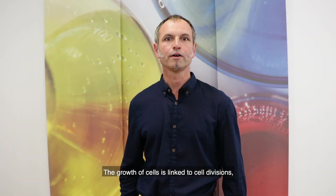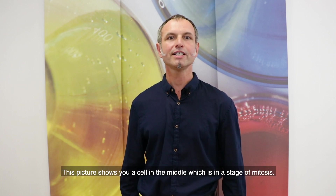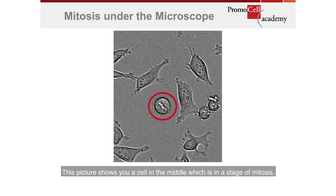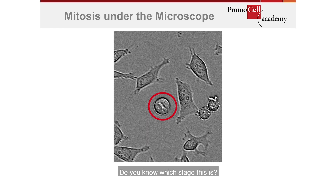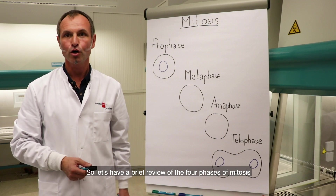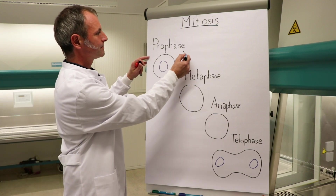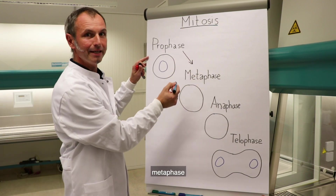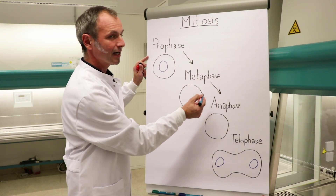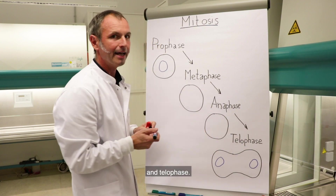The growth of cells is linked to cell divisions termed mitosis. This picture shows a cell in the middle which is in a stage of mitosis — do you know which stage this is? Let's have a brief review of the four phases of mitosis we can see in cell culture: prophase, metaphase, anaphase, and telophase.